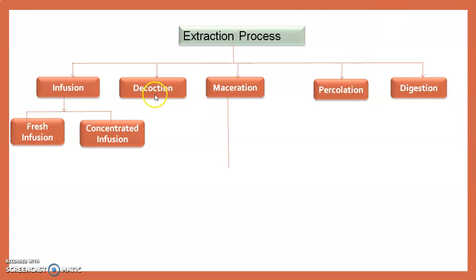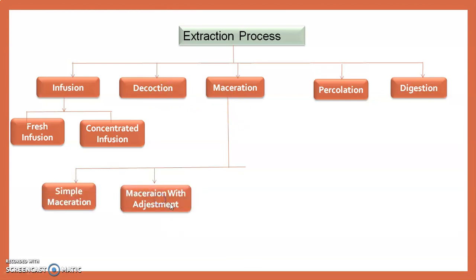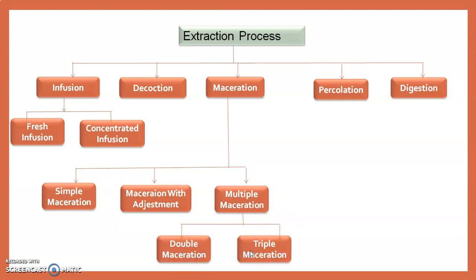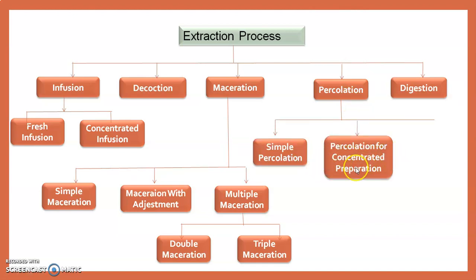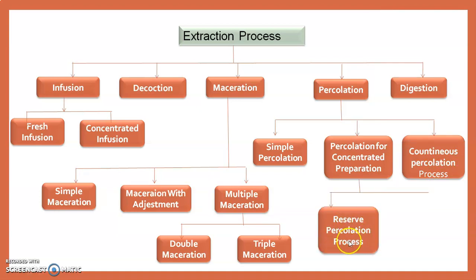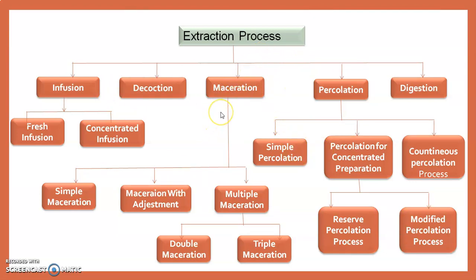Decoction involves only boiling of plant or animal constituent with water. Maceration is divided into simple maceration, maceration with adjustment, and multiple maceration. Multiple maceration is divided into double maceration and triple maceration. Percolation is divided into simple percolation, percolation for concentrated preparations, and continuous percolation process.